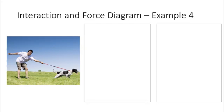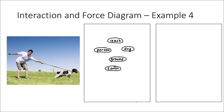Here we have a scenario: a person pulling on their dog. The dog's trying to go forwards, they're trying to stop their dog, and so they're both planted and not moving. I'll begin my interaction diagram by listing all of the objects in my scenario. Take a moment, pause the video, and see if you can list all of the objects in this scenario. In this case, I have the person, the leash, the dog, the ground, and the earth.